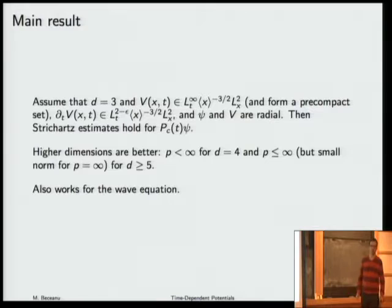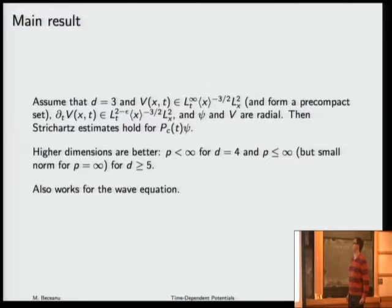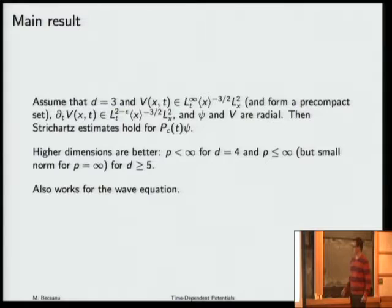By this projector, I mean the projection onto the continuous spectrum of this operator. These results continue to improve in higher dimensions. For dimension 4, instead of L² minus epsilon, one can take any Lebesgue space except for L^∞. And in dimension 5 or higher, one can also get L^∞ in time, but then the norm of this time derivative has to be small.